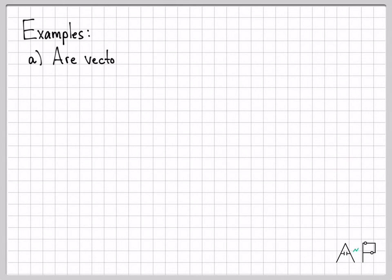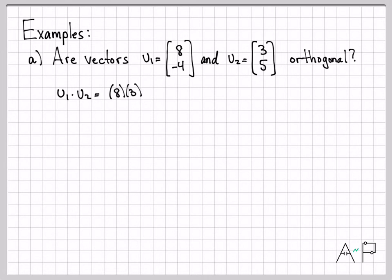Let's do a couple examples. Are these vectors u₁ and u₂ orthogonal to each other? Very easy to figure out—just compute the dot product. u₁ · u₂ is 8 times 3 plus negative 4 times 5, which is 24 minus 20, which is 4. 4 is not equal to 0, so no, these are not orthogonal to each other.